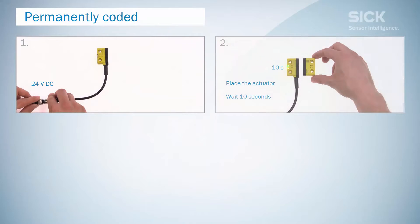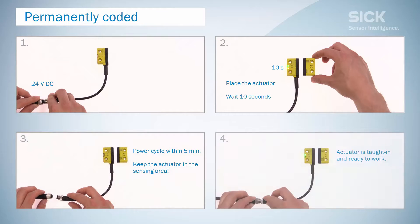The teach-in procedure for the permanently coded sensor is the same as for the unique coded one. However, permanently coded sensors allow only one-time teaching.